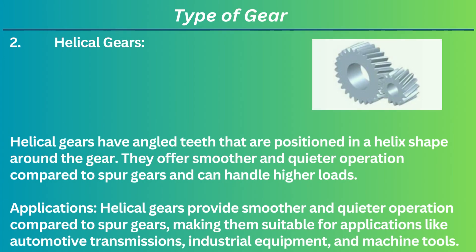2. Helical gears. Helical gears have angled teeth that are positioned in a helix shape around the gear. They offer smoother and quieter operation compared to spur gears and can handle higher loads. Applications: Helical gears provide smoother and quieter operation compared to spur gears, making them suitable for applications like automotive transmissions, industrial equipment, and machine tools.